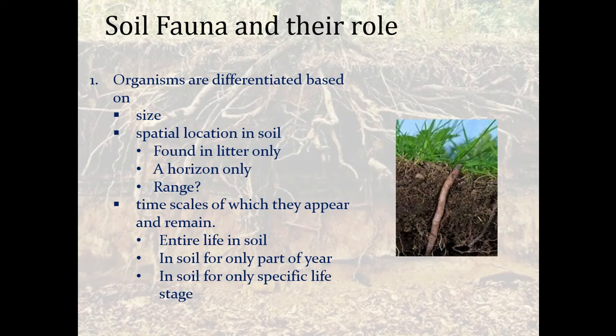Spatial locations vary as well: some organisms are found in litter only, some in the A horizon only, and others can go up and down, mixing the A and the O horizon. Think of a small bug versus a shrew, and the ability to move horizontally across the landscape as well.